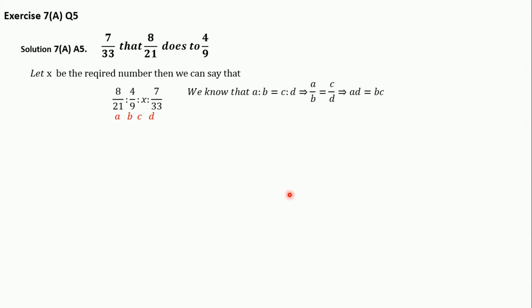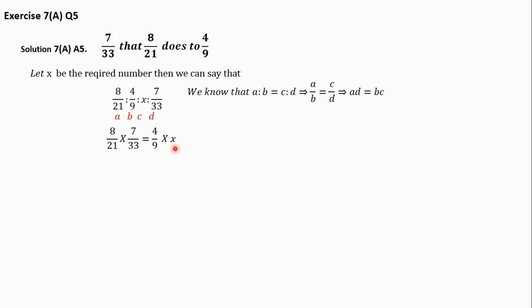Now consider 8/21 as a, 4/9 as b, x as c, and 7/33 as d. Applying ad = bc, we get: 8/21 × 7/33 = 4/9 × x.